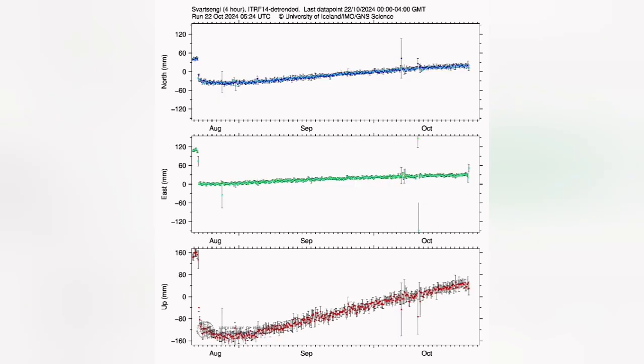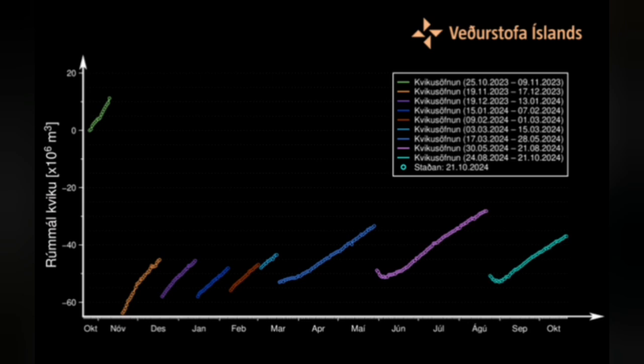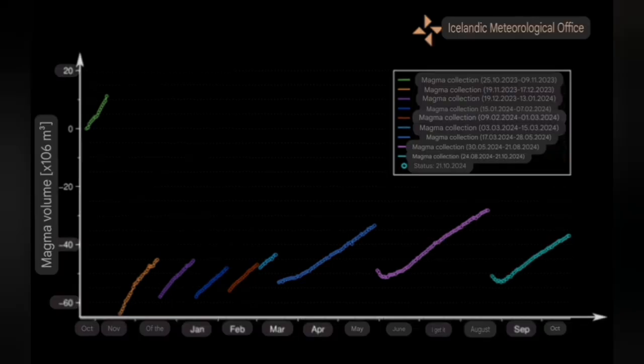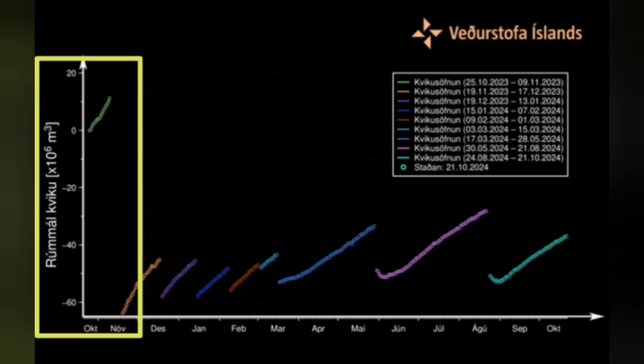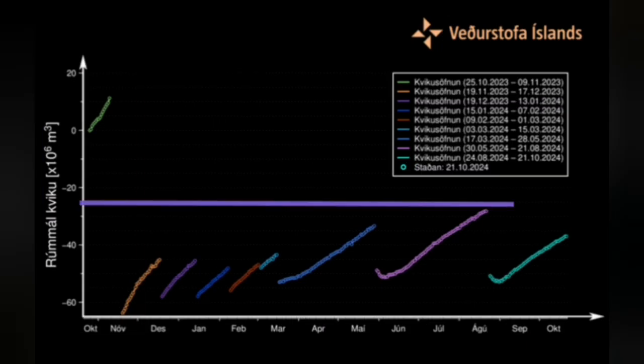several eruptions, and this is the accumulated data. In the previous eruption, we had around 24 million cubic meters of magma. That's the unit you can see there. Of course, the measurement is GPS data, and based on